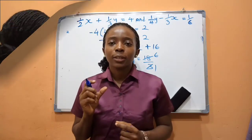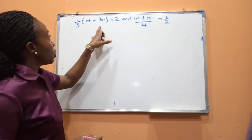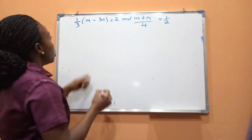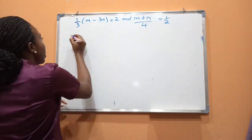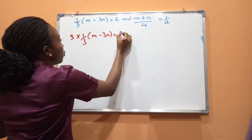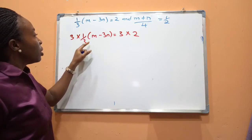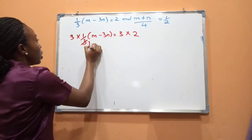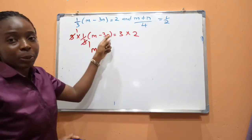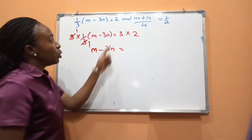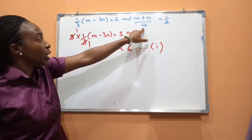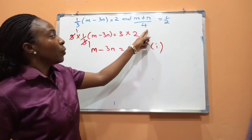Let's look at something more complex. For the first equation, the LCM is 3. Multiplying each term by 3: 3 × (m/3) − 3n = 3 × 2. Simplifying: m − 3n = 6. This is equation 1.